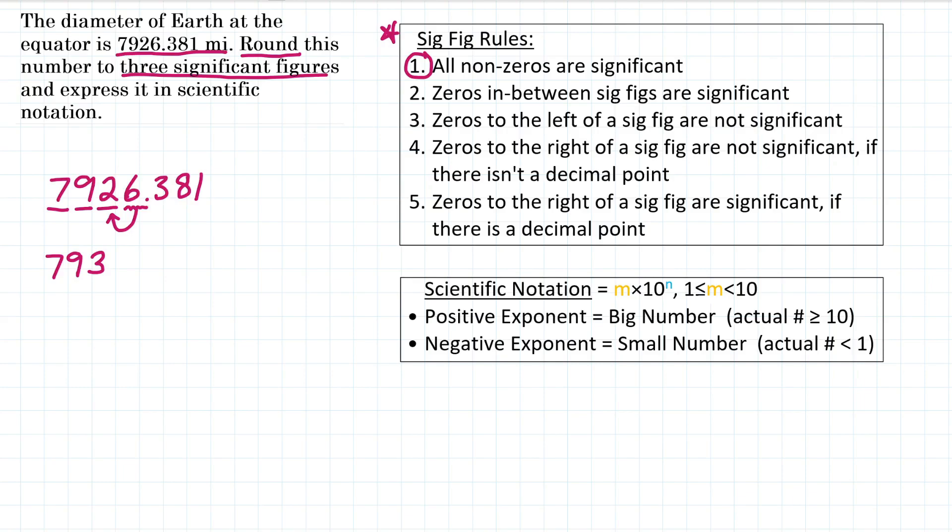But we have a placeholding zero here that we need to fill in because we need to have a number that's 7,930, not 793. So we need that non-significant placeholding zero there where the six used to be.